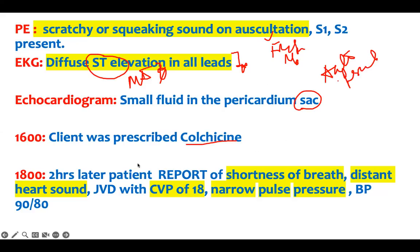The diagnosis is acute pericarditis. The patient was prescribed colchicine — this is the treatment of choice for pericarditis. But at 18:00, two hours later, the patient develops shortness of breath, distant heart sounds, JVD with a CVP of 18, and a narrow pulse pressure. This is consistent with cardiac tamponade.